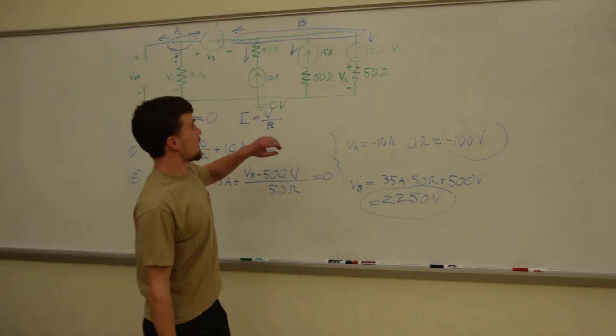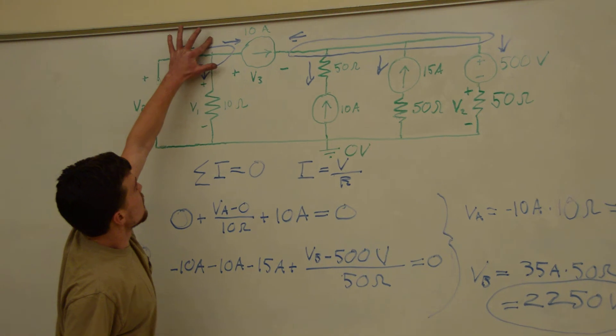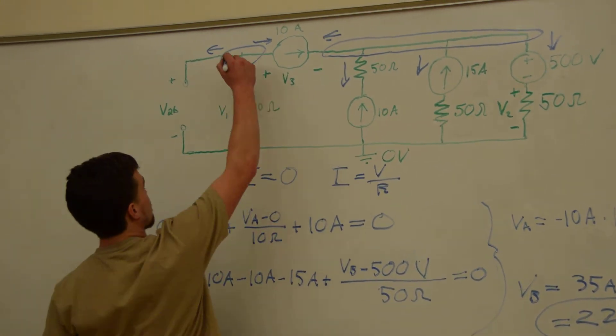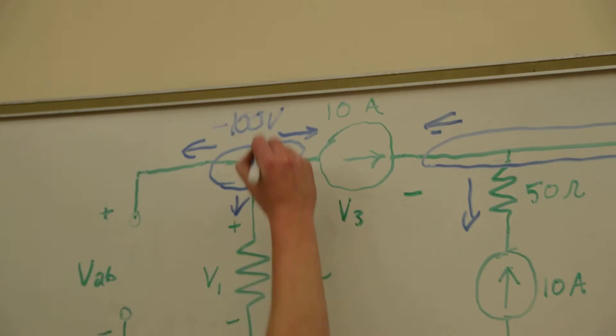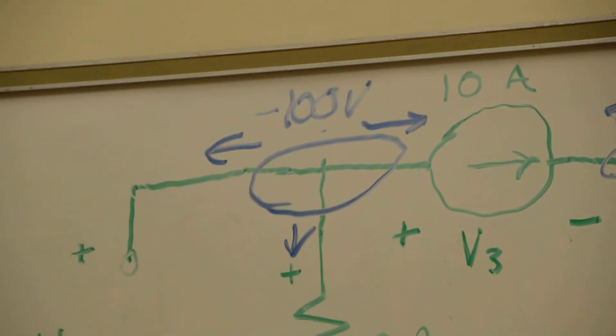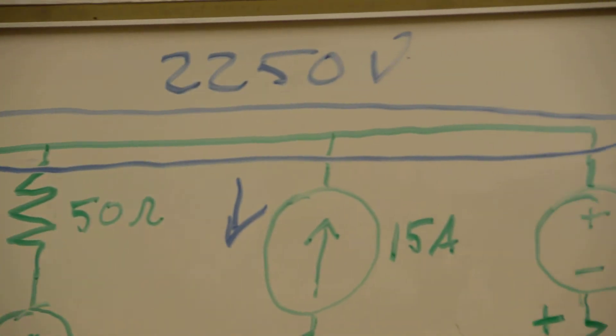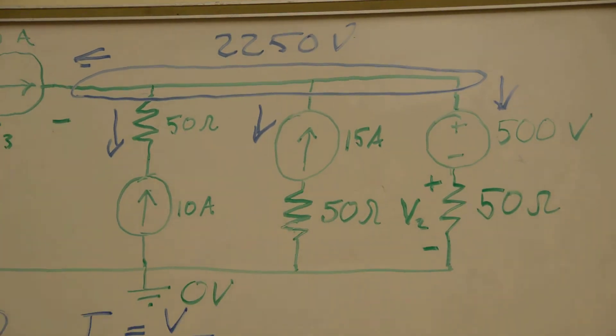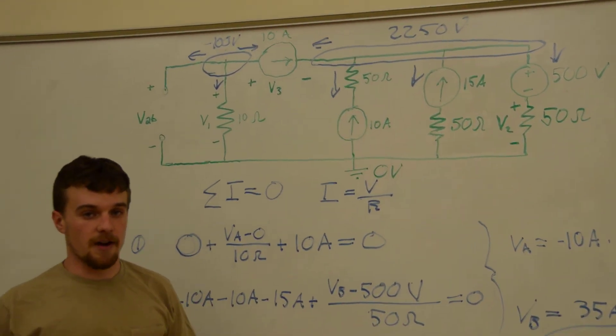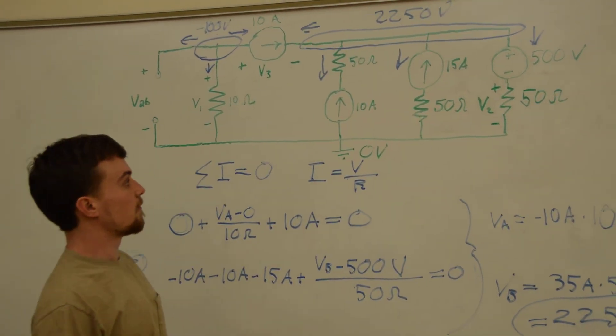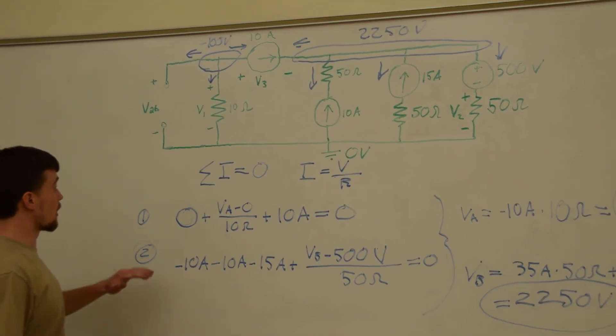So, we can take our names of these and replace them with the voltages. Now we can use these voltages to find any value your instructor wanted from this circuit. So, we'll start with VAB.